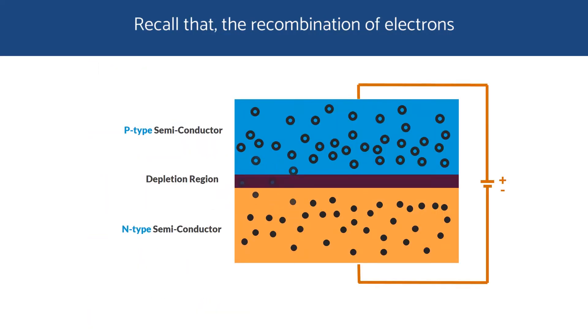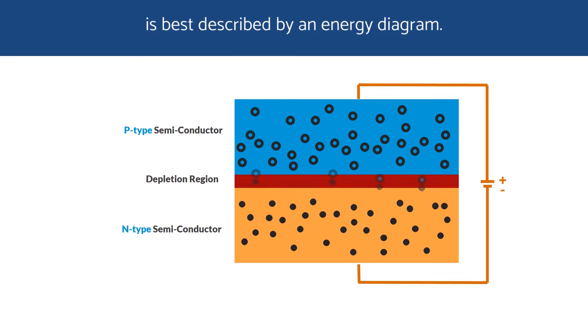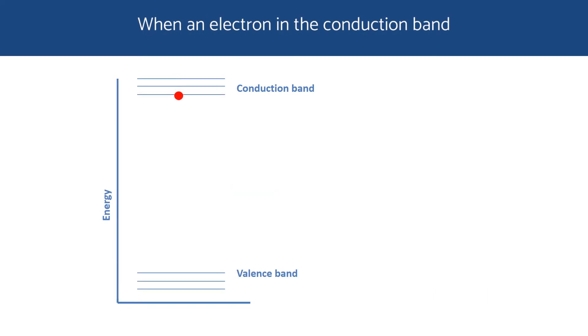Now recall the recombination of electrons and holes to give light in the previous video. The process, as we discussed, is best described by an energy diagram. When an electron in the conduction band falls to the ground state, it emits a photon.